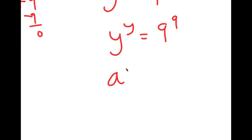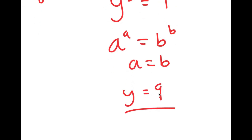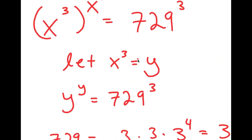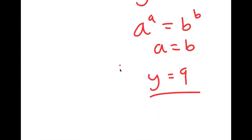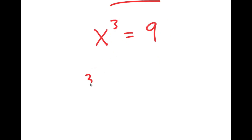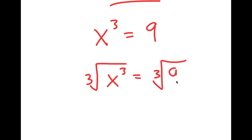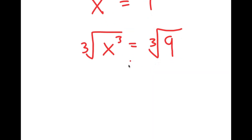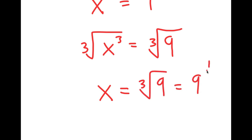Using the property that if a to the power of a equals b to the power of b, then a equals b, I can conclude y equals 9. Recalling that I let x to the power of 3 equal to y, this means x to the power of 3 equals 9. Taking the cube root on both sides, the cube root of x to the power of 3 is simply x, so x equals the cube root of 9, which is the same as 9 to the power of one third.